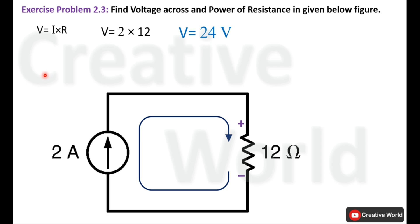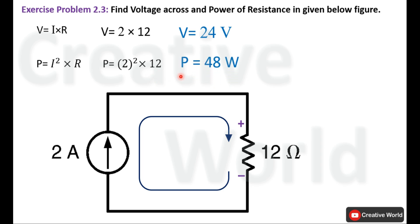Now we will calculate its power using P equal to I square multiplied by R. Current is taken with positive sign because current is entering from the positive terminal. Current is 2A; multiply by 12 ohm. The value of power is 48 watt, and because of the positive sign, this power is being absorbed or dissipated by the 12 ohm resistance.